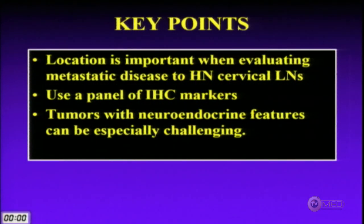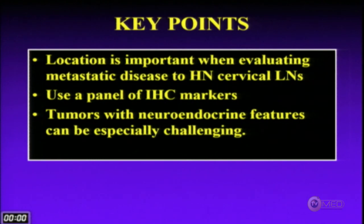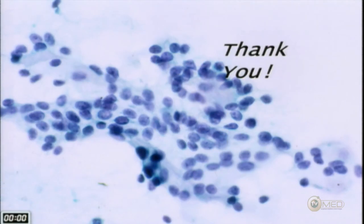Key points: location is important — the lymph node level in the head and neck limits the differential diagnosis; reference tables can guide you. Tumors with neuroendocrine features can be particularly challenging. Always try to have material available for ancillary studies.